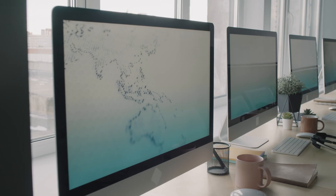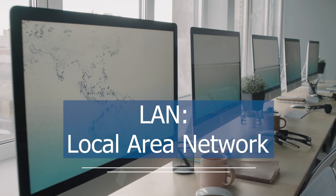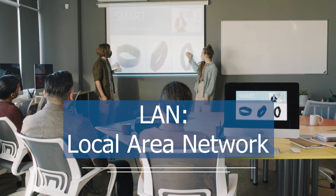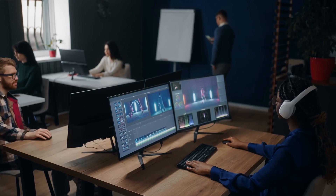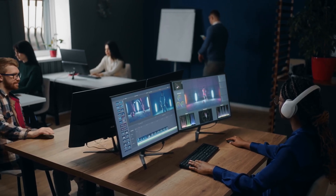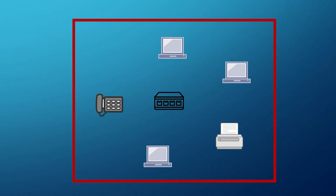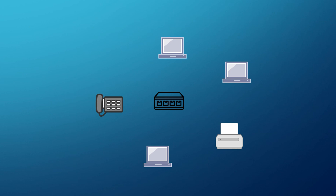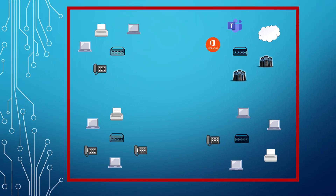When network devices are collected into a small area, we call this a LAN, or local area network. The term LAN can vary a little bit in how it's used. It may refer to a very small network. In a SOHO network, the local area network will be the switch with the handful of devices that connect to it. Or a LAN may be part of a bigger network, such as an SMB network.